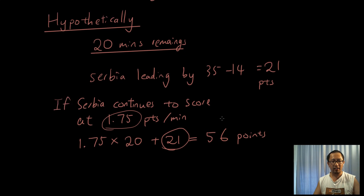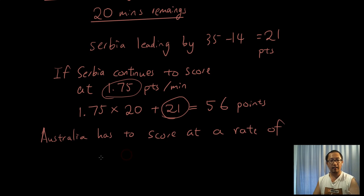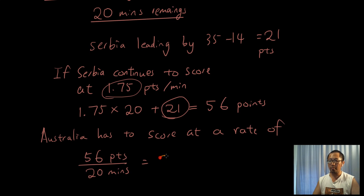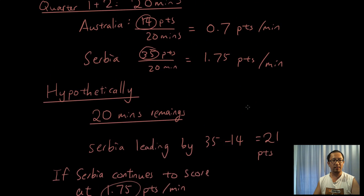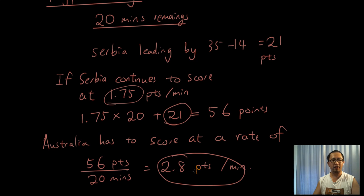We've got to catch up 56 points in 20 minutes, so Australia has to score at a rate of 56 divided by 20, which is 2.8 points per minute. We have to increase from 0.7 to 2.8 — we've got to be scoring 4 times our original rate. We have to increase from 0.7 to 2.8 points per minute if we wanted to even out Serbia's score, which is nearly impossible at that point in time.